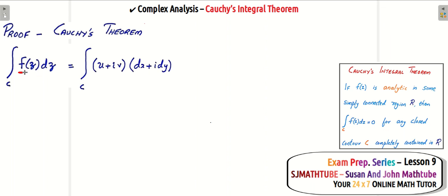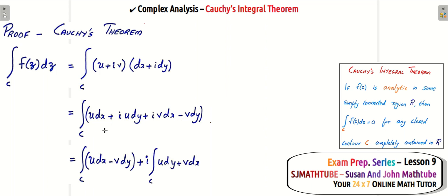Let's substitute: fz is nothing but u plus iv and dz is dx plus i dy. Now apply distributive property and you can simplify. Keep in mind i squared is minus 1. Real part and imaginary part separately, and split the integral.